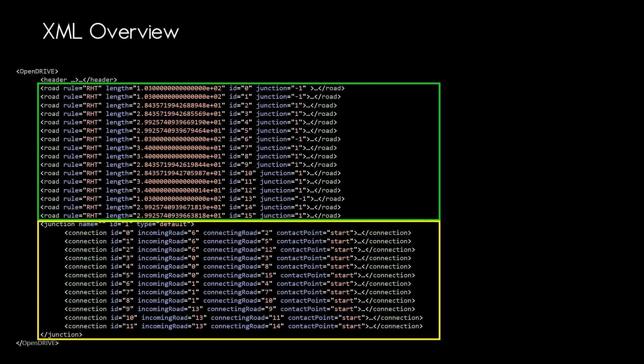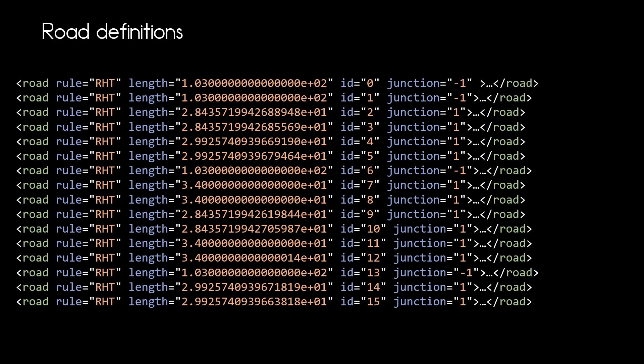So one step at a time. We will first inspect the road definitions and then we will have a look into the junction and the connection elements. All the roads we need are defined as road elements. In this example we need 16 roads for our simple cross junction.